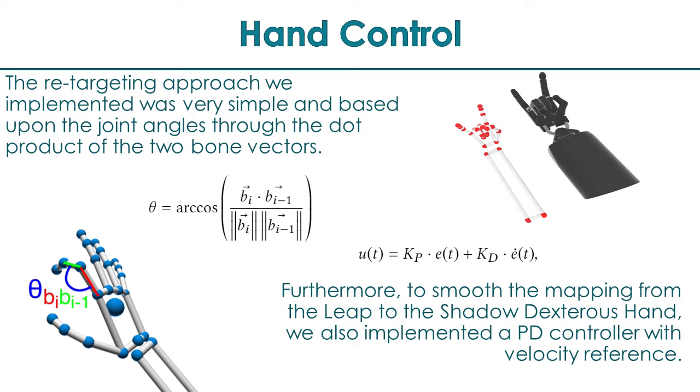Furthermore, to smooth out the mapping from the Leap to the Shadow hand, we also implemented a simple PD controller with velocity reference.